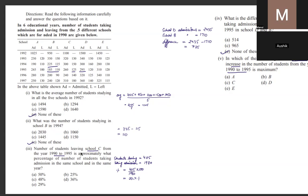The third question asks what percentage the number of students leaving school C from 1992 to 1995 represents. There appears to be a misrepresentation in the years stated, so we calculate from 1992 to 1995. The answer is approximately 20.4%.